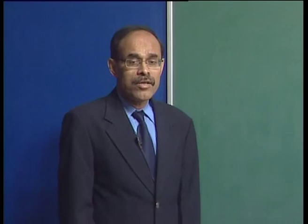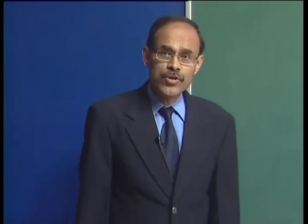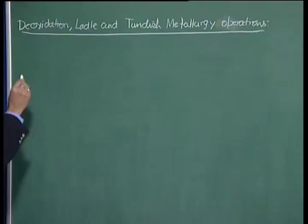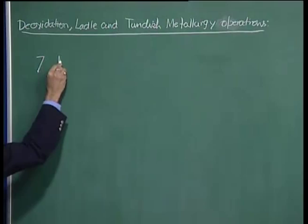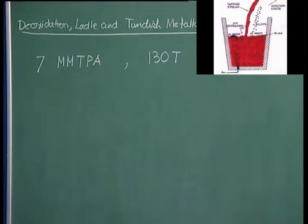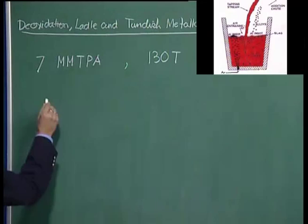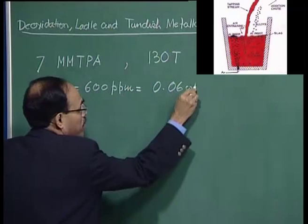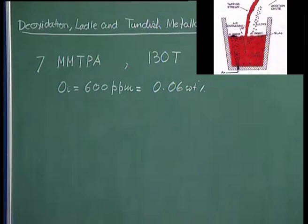The objective is to carry out a simple approximate deoxidation calculation and demonstrate how one can calculate the total amount of deoxidizer needed. Let us consider a plant with an annual production of about 7 million metric tons per annum, where the size of a heat is about 130 tons. The initial oxygen content is about 600 ppm, which converts to 0.06 weight percent, and we want a killed steel with a final oxygen level of about 20 ppm.